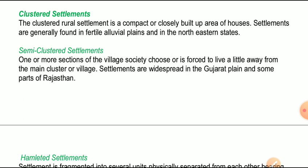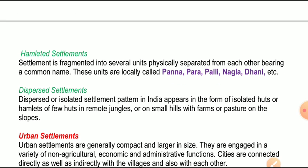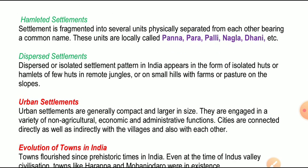Next is hamleted settlement. The settlement is fragmented into several units physically separated from each other bearing a common name. These units are locally called पन्ना, पारा, पाली, नागला, धानी, etc. यह छोटी-छोटी बस्तियां होती हैं - कुछ घरों के छोटे-छोटे समूह होते हैं जो particular इलाके में रहते हैं और यह एक-दूसरे से physical features के द्वारा separated होते हैं।